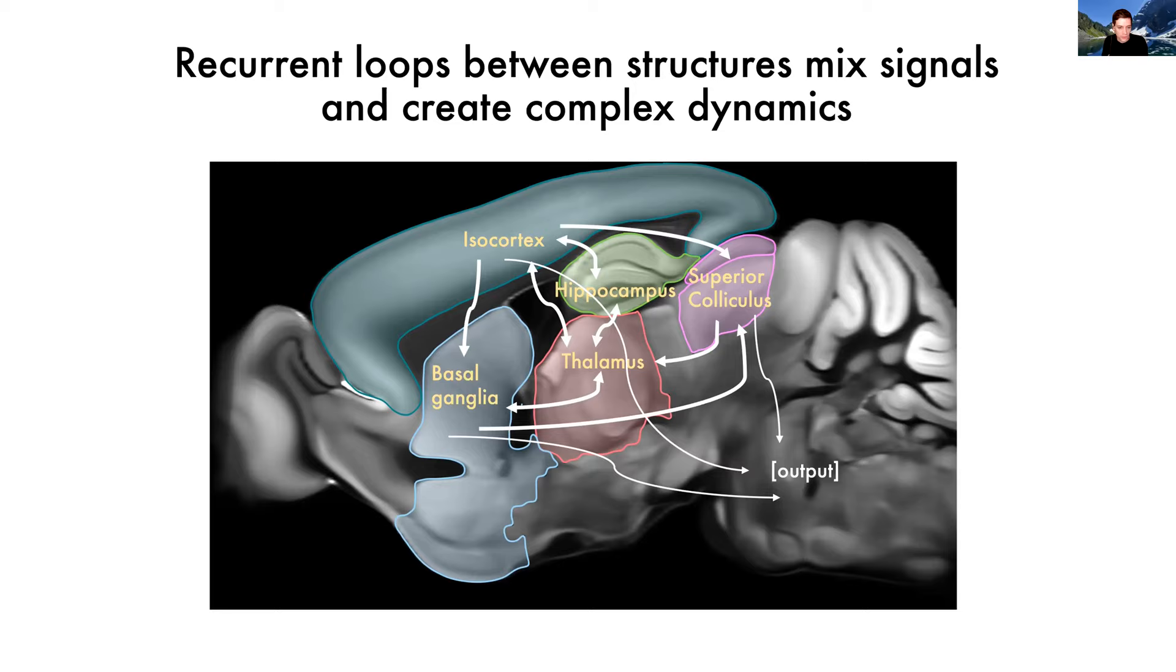Because of those loops, you cannot predict in principle what any particular structure is going to represent or what dynamics the system is going to have unless you measure it. Certainly, neuroscience has made many educated guesses about what brain regions are going to subserve some particular function or perform some particular computation. But ultimately, we're going to have to go look and see what pieces of information get propagated to what brain regions and what brain regions are necessary for which behaviors.